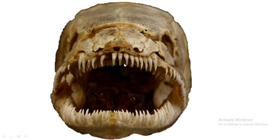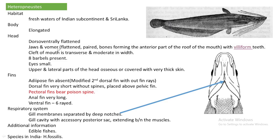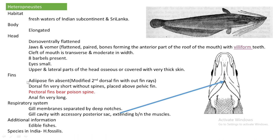The upper and lateral parts of the head are osseous, meaning covered with very thick skin. Regarding fins, the adipose fin is absent. The adipose fin is a small fleshy fin present in some types of fishes — if present it would appear as a fleshy fin without any rays — but in Heteronistus this adipose fin is totally absent.